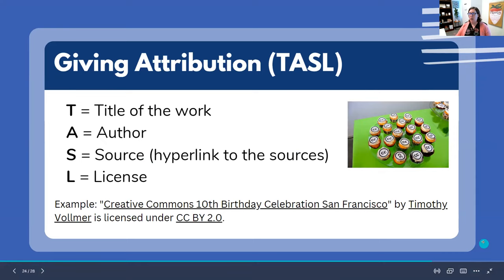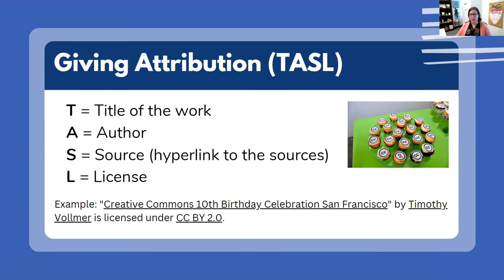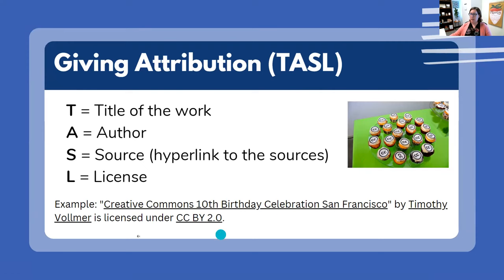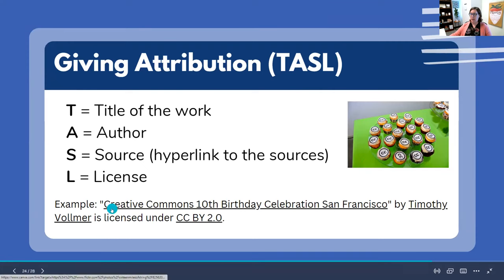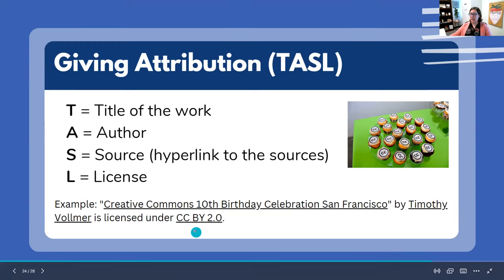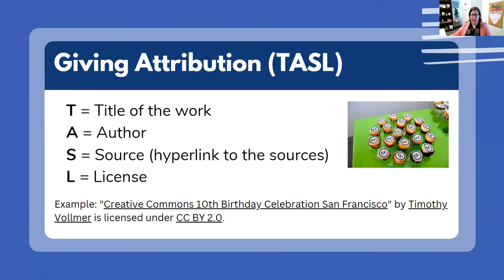All CC licenses require that you give attribution. Creative Commons suggests using what they call the TASL method: Title of the work, Author, Source (hyperlinked), and License. For example: 'Creative Commons 10th Birthday Celebration' by [linked author], licensed under CC BY 2.0 [linked to the license]. It's a pretty straightforward, easy way to give attribution and fulfill that requirement.